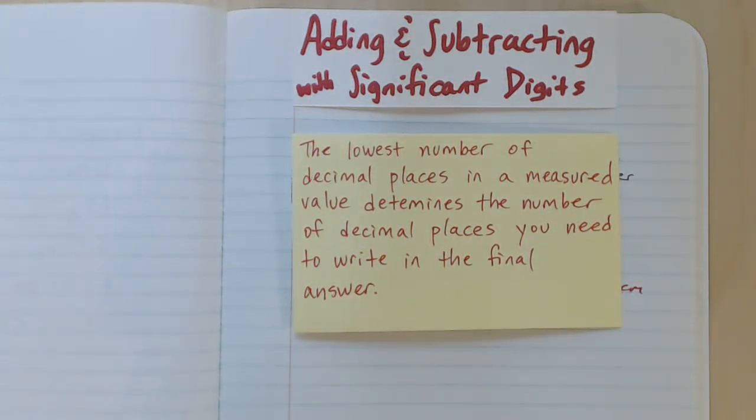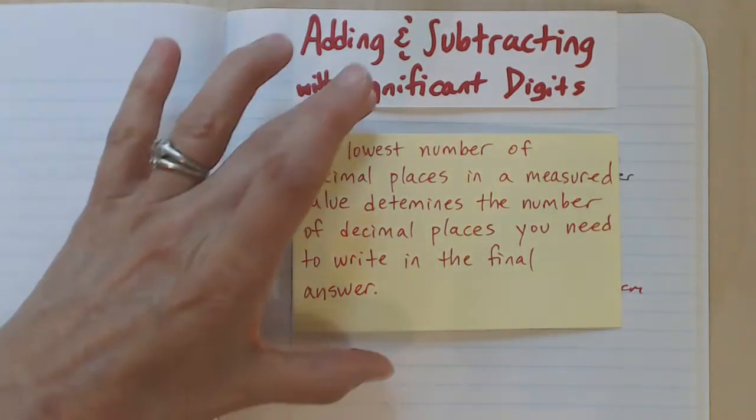Adding and subtracting with significant digits. The rule in this case for addition and subtraction is that the lowest number of decimal places in a measured value, that's what determines the number of decimal places you need to write in your final answer.